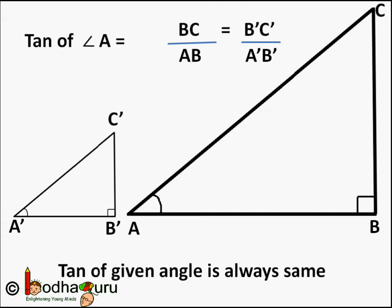So tan of angle A is a constant value which is a ratio of BC to AB or B'C' to A'B'.